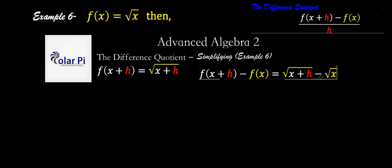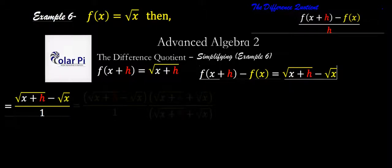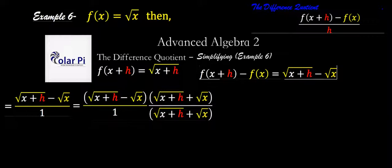So what we're going to do is we're going to take this and write it as a fraction by writing a denominator of 1 to start. And then we're going to take this fraction and multiply top and bottom by the conjugate of root x plus h minus root x, which will be root x plus h plus root x. That's the conjugate. So we do that and we get this.